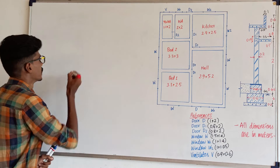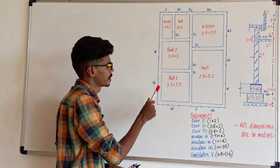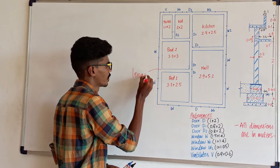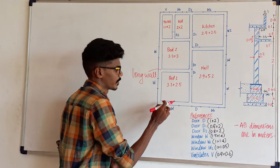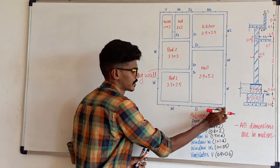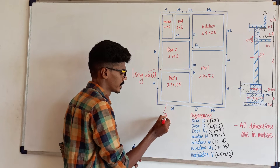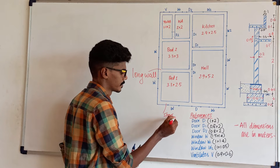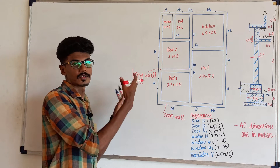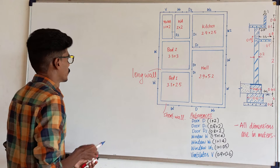Let's see. In this figure, I am using the long ones and the short ones. We are using these long ones and short ones. So, first one: center line length of long walls.